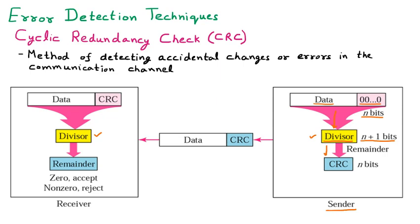After dividing, we get a remainder. That remainder, which is of n bits, is the CRC. Simply put: we have data and a divisor; we divide the data by the divisor, and the remainder is the CRC — the Cyclic Redundancy Check. We then send that original data plus the CRC together to the receiver.